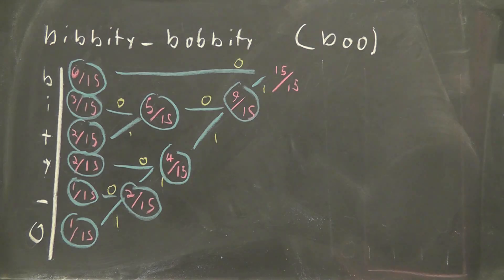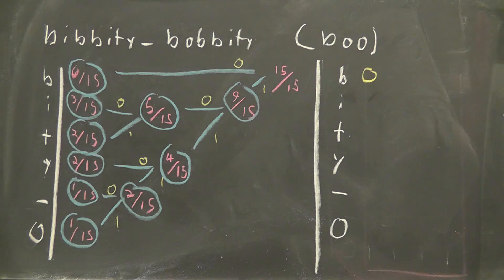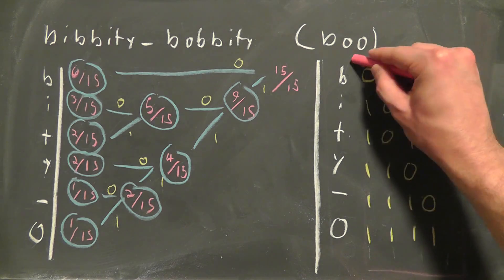Step four. Go backwards through the tree and every time you go up, place a zero. And when you go down, place a one. The code word for each character will be the concatenation of these values and will create a code book like this.